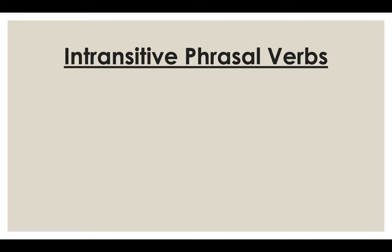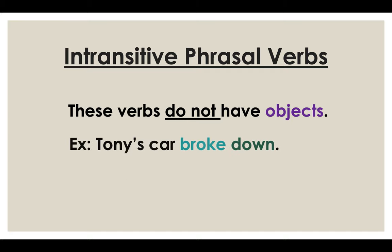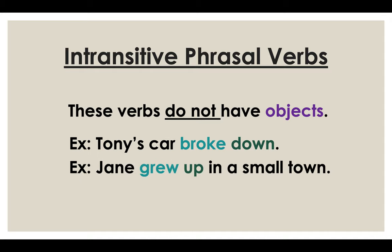Intransitive phrasal verbs do not have objects. Example: Donnie's car broke down — no object, as you can see. Jane grew up in a small town — no object here.